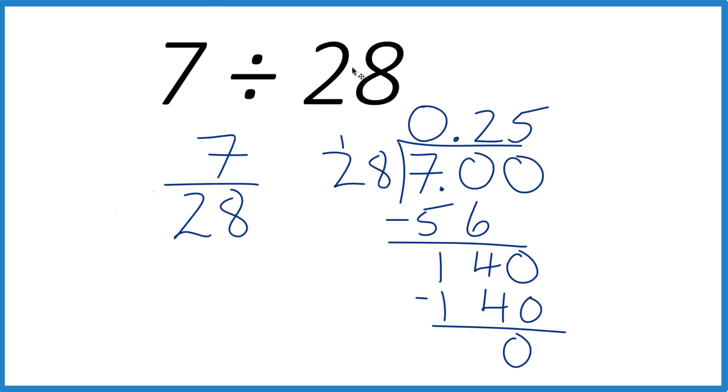This is Dr. B. 7 divided by 28, the answer is 0.25. Thanks for watching.